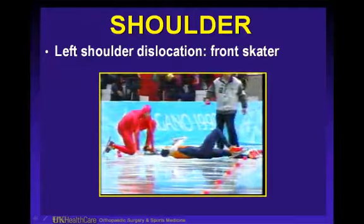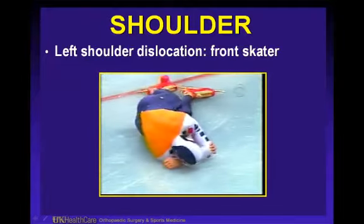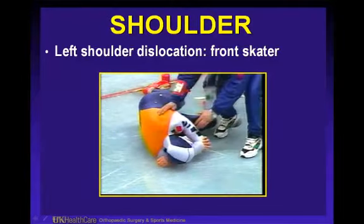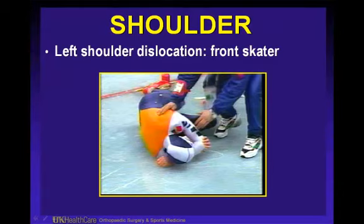A speed skater goes down on the ice and is hanging on to his left elbow — an anterior shoulder dislocation. You need to have a plan if you're covering ice hockey or speed skating for getting to players on the ice. I would not try to reduce an anterior dislocated shoulder on the ice where you have no traction force. Variations of gurneys and assistance from other athletes who can skate are needed to reach a player. You have to have a plan for different surfaces.